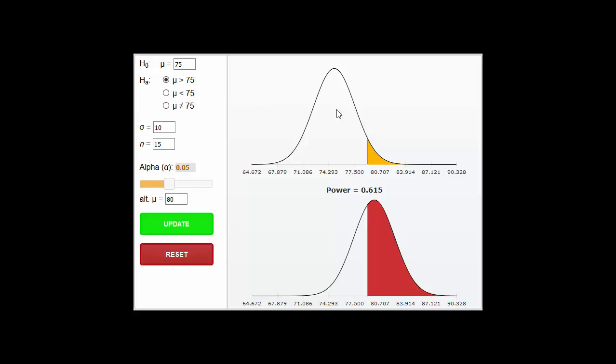So if we reject H0 when it's true, we have the potential to make an error 5% of the time and be correct 95% of the time.